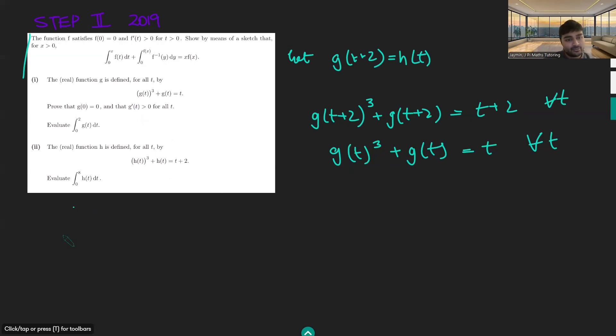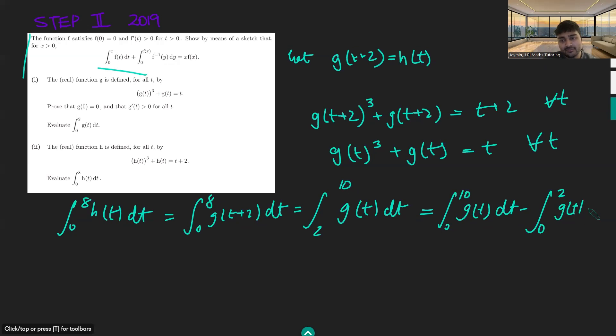So the integral from 0 to 8 of h(t) dt, well, that's just the integral from 0 to 8 of g(t+2) dt. And now if we just do a u substitution and replace t + 2 with u, we're going to get the integral from 2 to 10 of g(t) dt. And now we want to use this fact here that the integrals want to start from zero. So it's going to be the integral from 0 to 10 of g(t) dt minus the integral from 0 to 2, sorry, of g(t) dt. Like so.